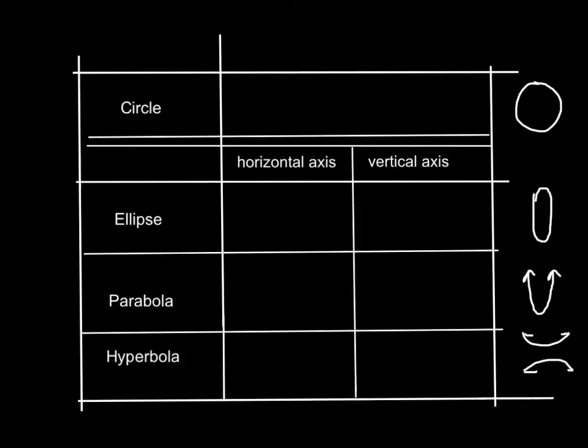Starting with the circle, we have an equation of x minus h squared plus y minus k squared equals r squared. Generally, our circle has this form, and r is our radius.